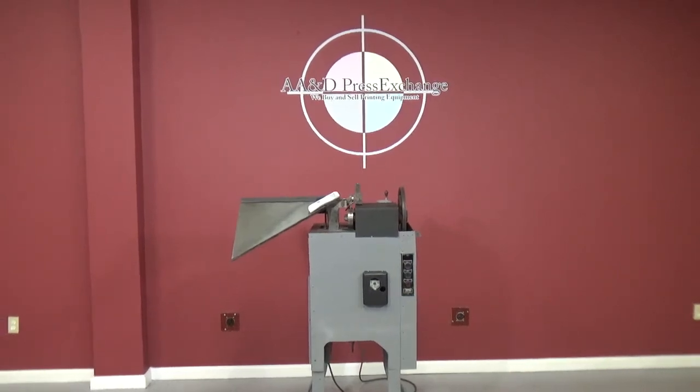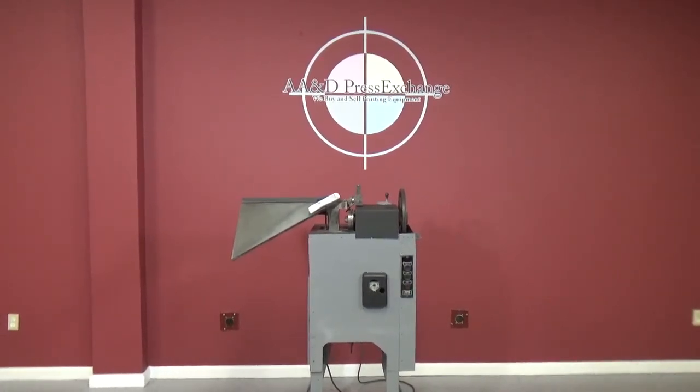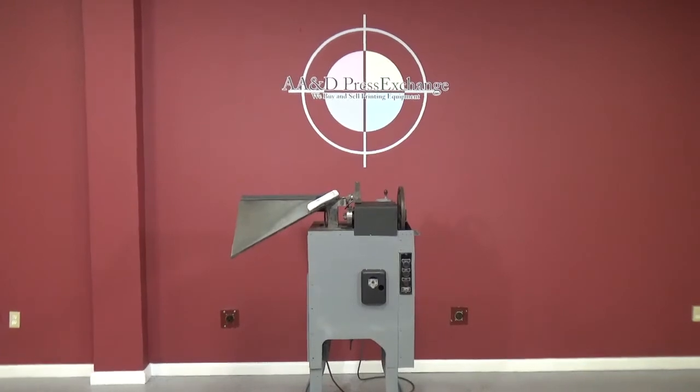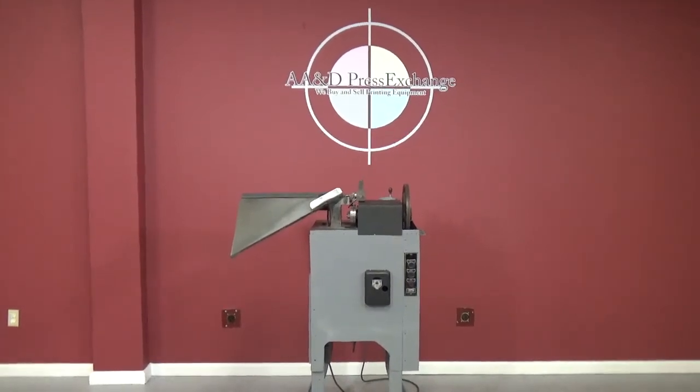Up for auction is a spiral binding coil maker. This actually takes a spool of wire and creates a steel coil. Any length you want, you can cut it.